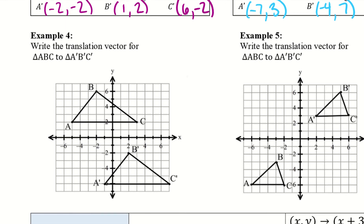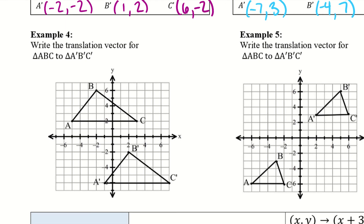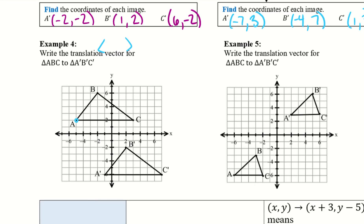Alright, so now for examples 4 and 5, we want to write the translation vector that happens. So remember that the vector will be with like two little arrows on both sides instead of the parentheses. So what you're going to do is pick one point. It does not matter which one, just pick one. So we'll do A. And so I want to count how much it goes down and over, or in some cases it might go up and over. So we're going to 1, 2, 3, 4, 5, 6, 7, 8. So I went down 8. So down 8, and then 1, 2, 3, 4.